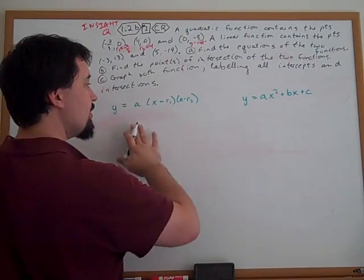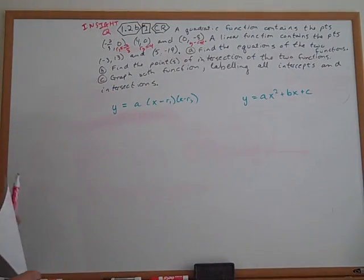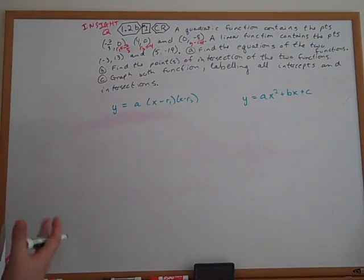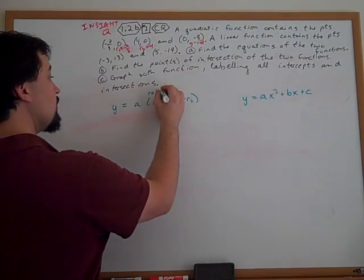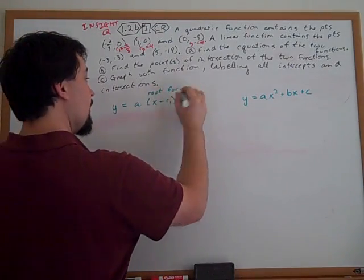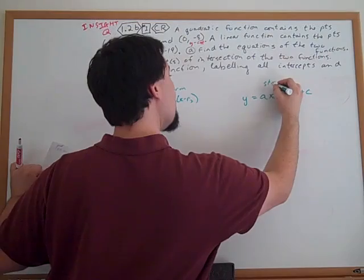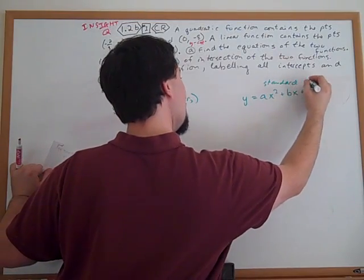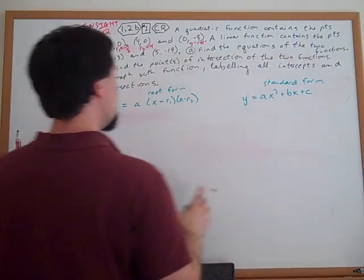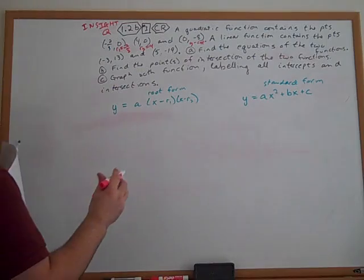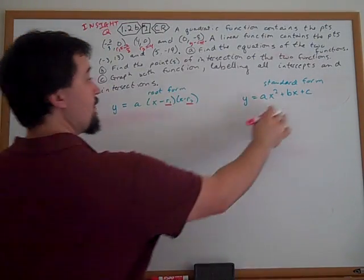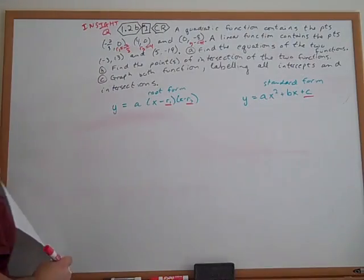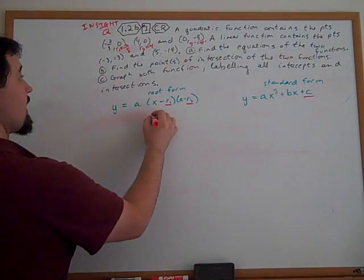I'm going to go ahead and solve this question both ways, and you go ahead and choose which way you prefer. Now, this is our root form, and this is our standard form. Well, right away, we can plug in for the roots here, and over here we can plug in for the c value. Let's go ahead and do that now.